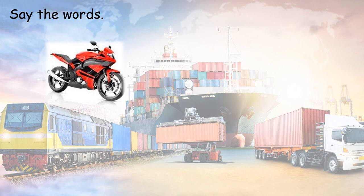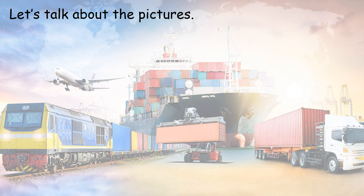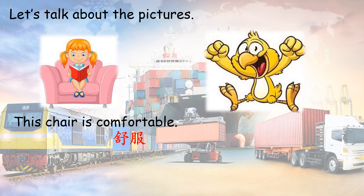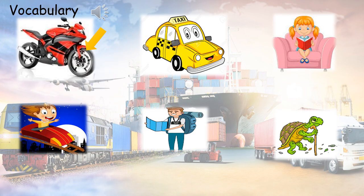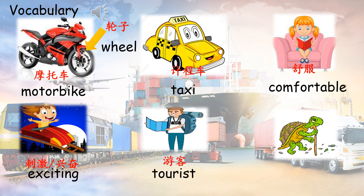Let's say the words: motorbike, tourist. Vocabulary for Module 6 - Our World: motorbike, wheel, taxi, comfortable, exciting, tourist.